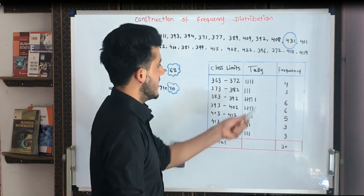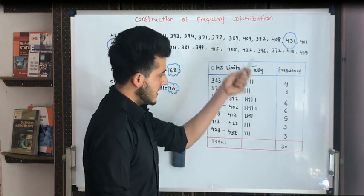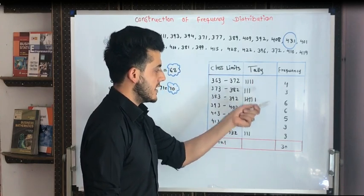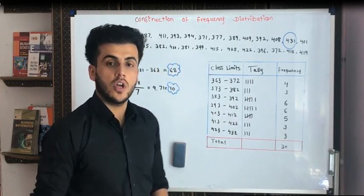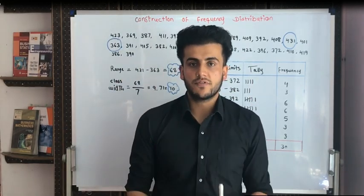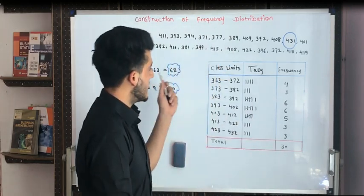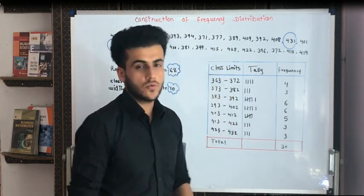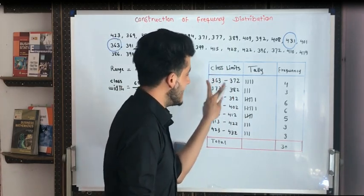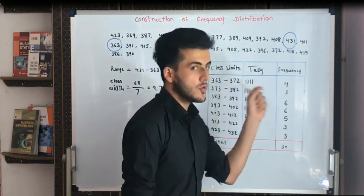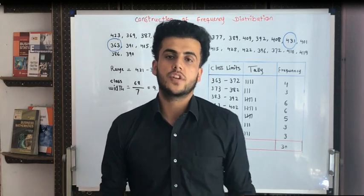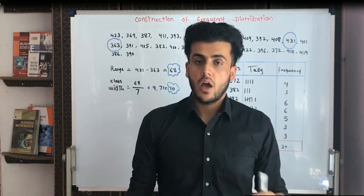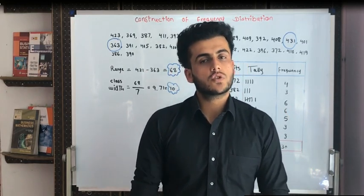Suppose we are having these numbers here — 4, 3, 6 — continuously going on, these are the observations. Suppose we are having a class interval of 363 to 372. It means between these two values we are having four people, four observations. This is why frequency is very much important. On the other hand, we are having frequency distribution.